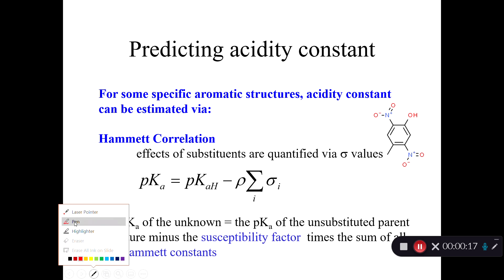And the most famous way to do that is through something called the Hammett correlation. Hammett of course is a dead white guy, not Dashiell Hammett, just Hammett.